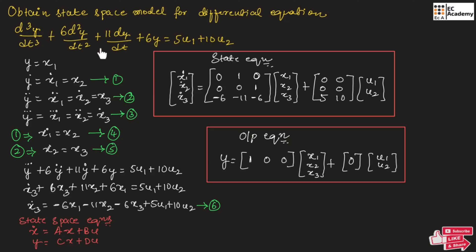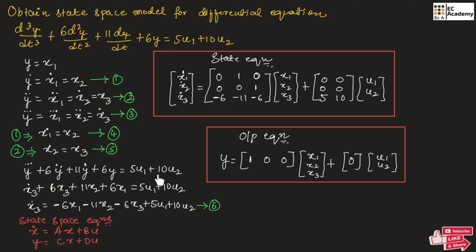For the given differential equation, in place of d-cube-y by dt-cube we write y-triple-dot (3 times differentiation), d-square-y by dt-square becomes y-double-dot (2 times differentiation), and dy by dt becomes y-dot (1 time differentiation). So we rewrite the equation as: y-triple-dot plus 6y-double-dot plus 11y-dot plus 6y equals 5u1 plus 10u2.